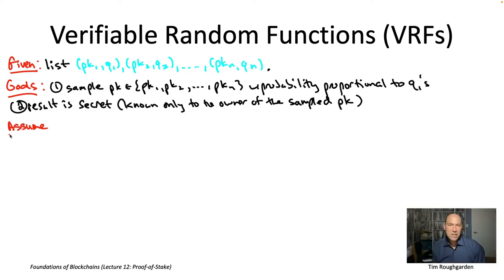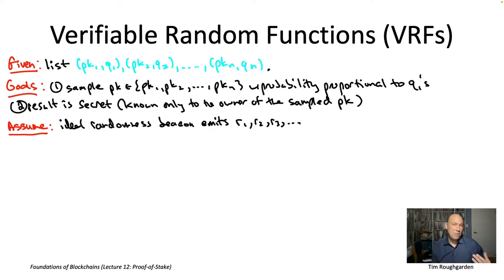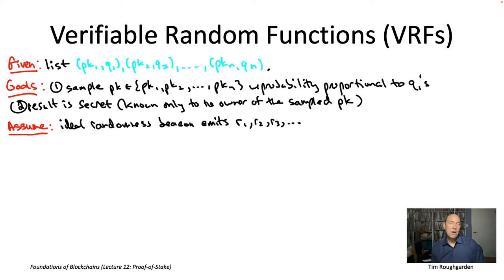In this video and the next, we're going to retain our assumption of access to an ideal randomness beacon. Unlike the last video where it felt like it trivialized the problem, it really does not trivialize the problem when you have this extra secrecy requirement. It's actually quite challenging to get this even with access to an ideal randomness beacon. After these two videos about verifiable random functions, we'll revisit and ask what would be a practical approximation of one of these ideal randomness beacons.